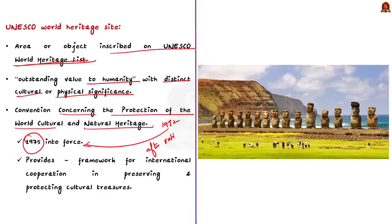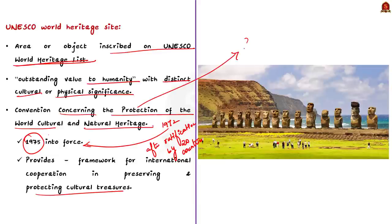The sites are designated as having outstanding universal value under the Convention Concerning the Protection of World Cultural and Natural Heritage. This document was adopted by UNESCO in 1972 and officially entered into force in 1975 after being ratified by 20 countries. The Convention provides a framework for international cooperation in preserving and protecting the cultural treasures and natural areas throughout the world. Under this Convention, UNESCO strives to encourage the conservation, identification, and maintenance of natural and cultural heritage around the world.